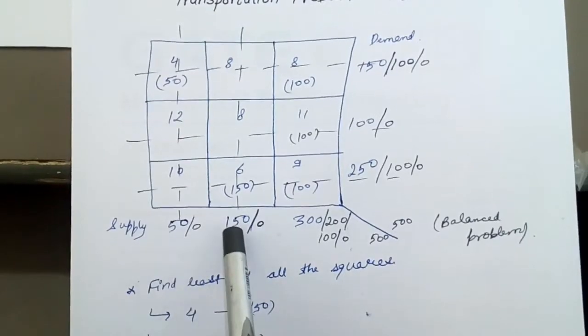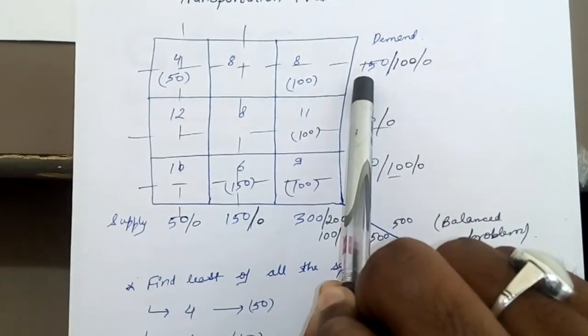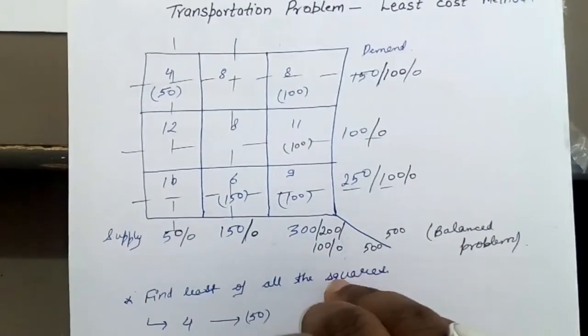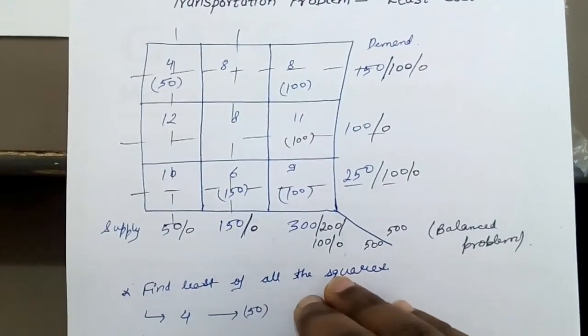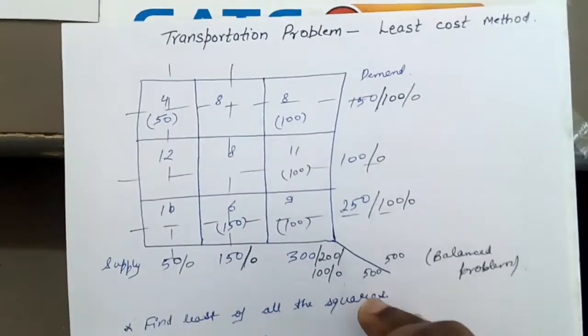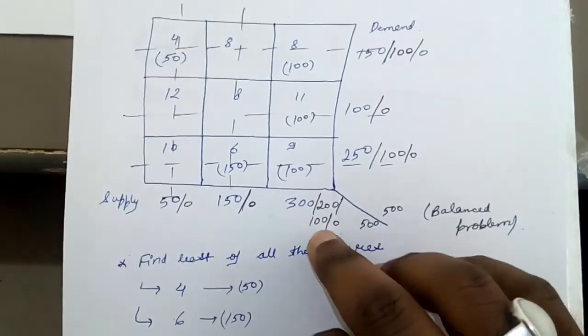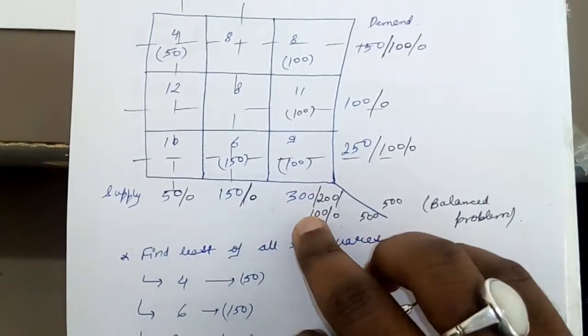First you have to check whether it is a balanced problem or not. So you have to add total supply and total demand. Since the total supply is equal to 500 and total demand is equal to 500, so it is a balanced problem.